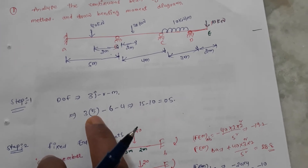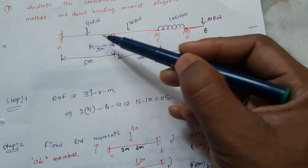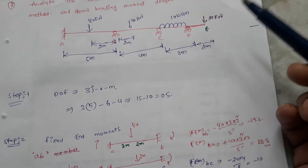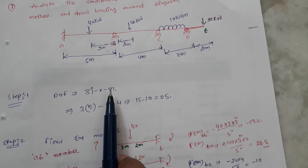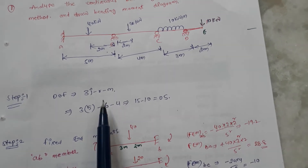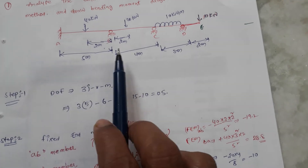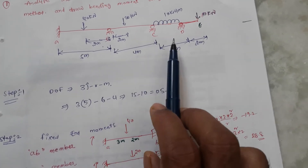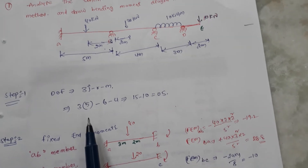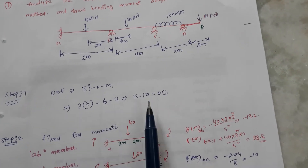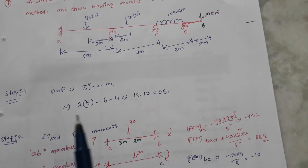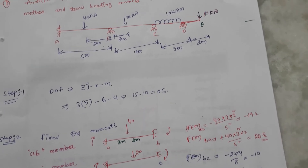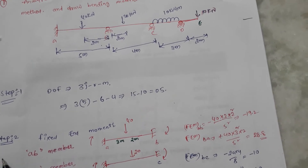There are 5 joints: joints 1, 2, 3, 4, and the free end makes joint 5. There are 6 reactions total — the fixed end has 3 reactions, and there is 1 reaction at each of the other supports, giving 6 total. The number of members is 4. Therefore the degree of freedom is 5. Step 2: find the fixed end moments.